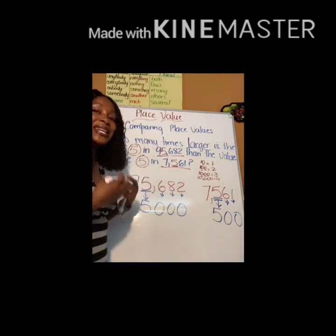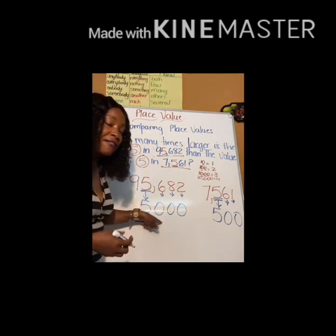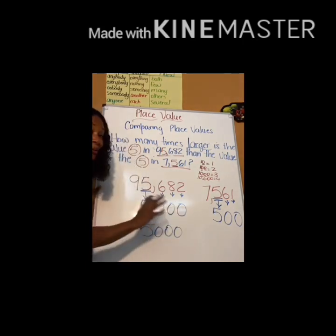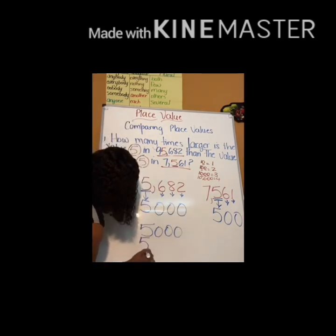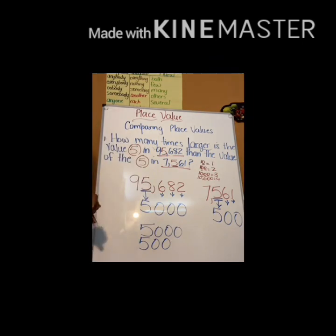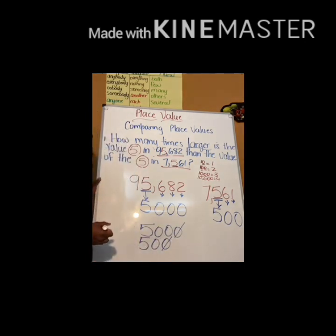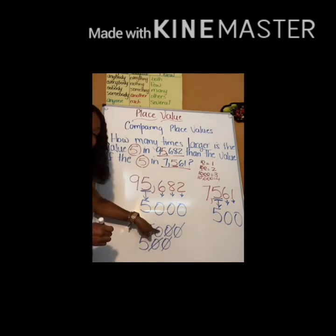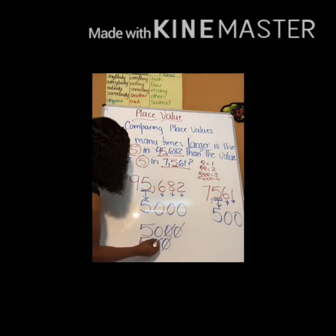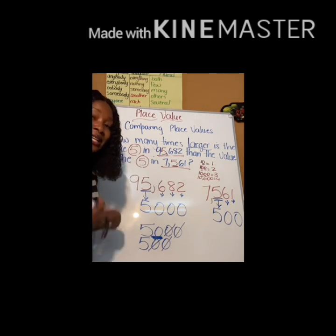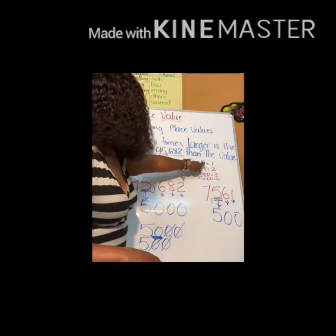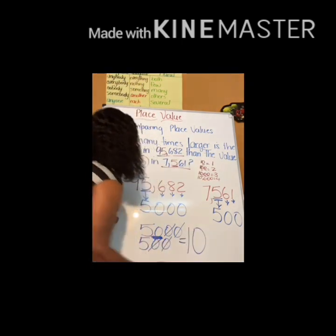Now they want to know how many times greater is this five than this five. I'm going to write 5,000 and write 500 underneath it. Then I'm going to cancel matching zeros — that's one pair, that's two pairs. I still have one zero left with no more at the bottom. I'm looking at my zero: if it's one zero, it is my power of 10 with only one zero, which is 10. So again, my answer is 10.